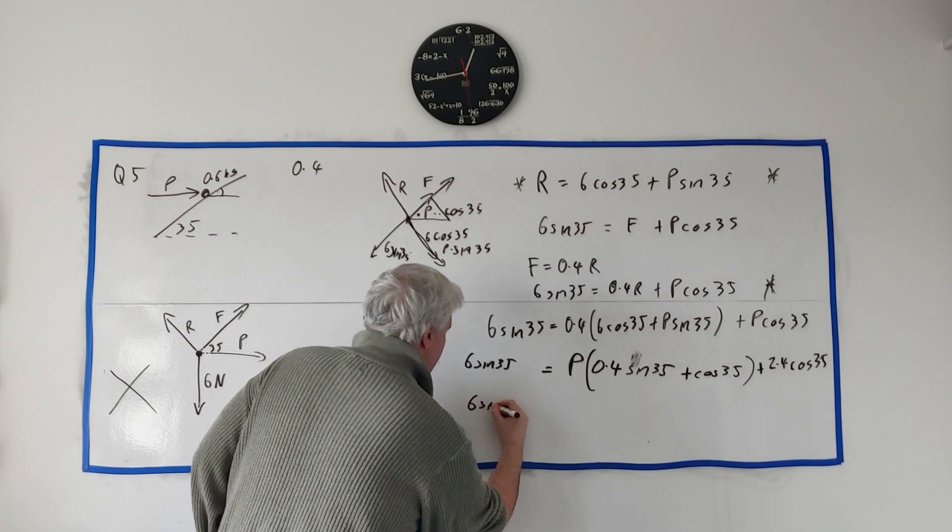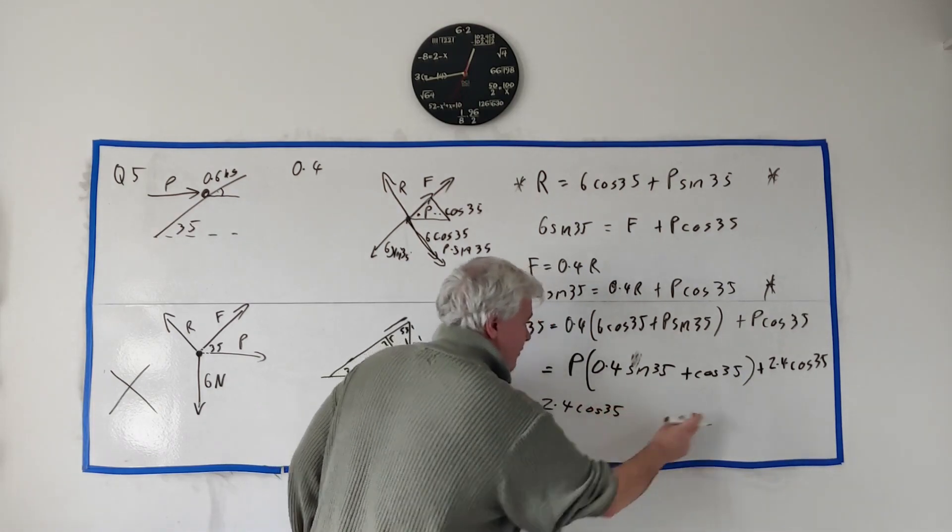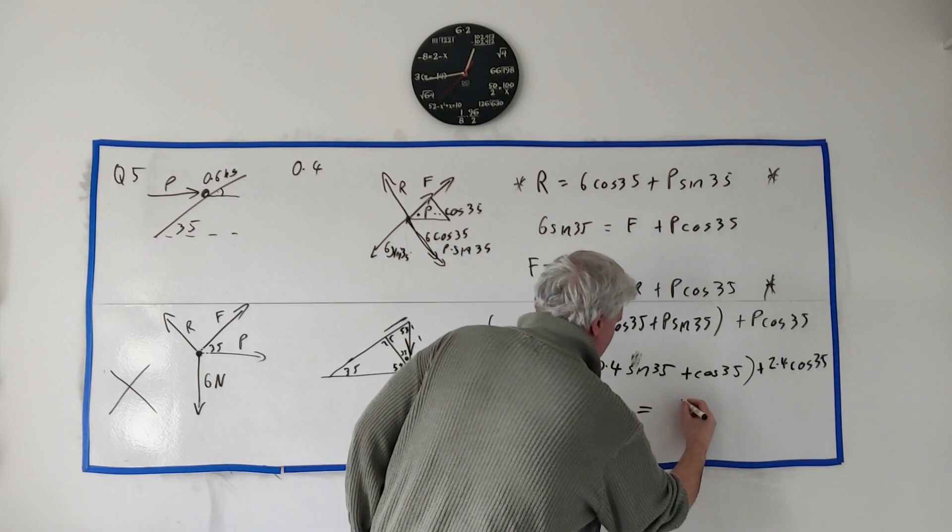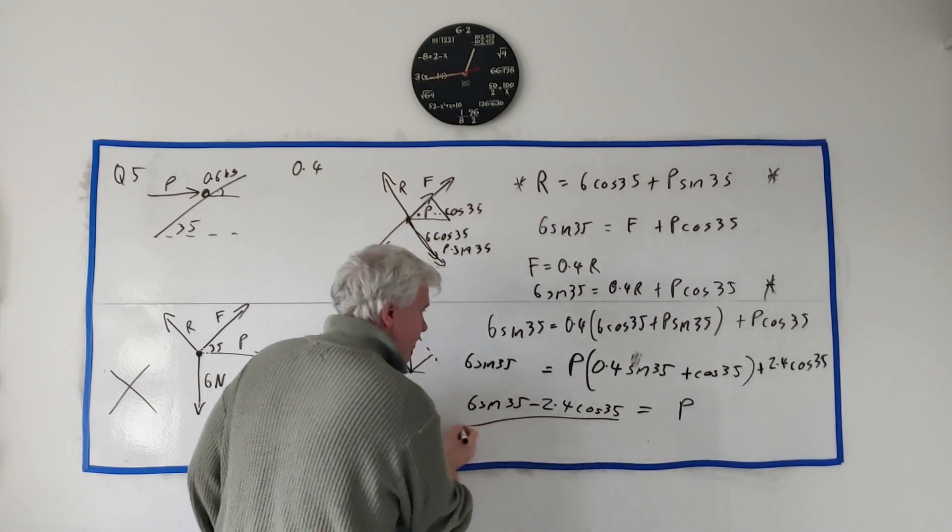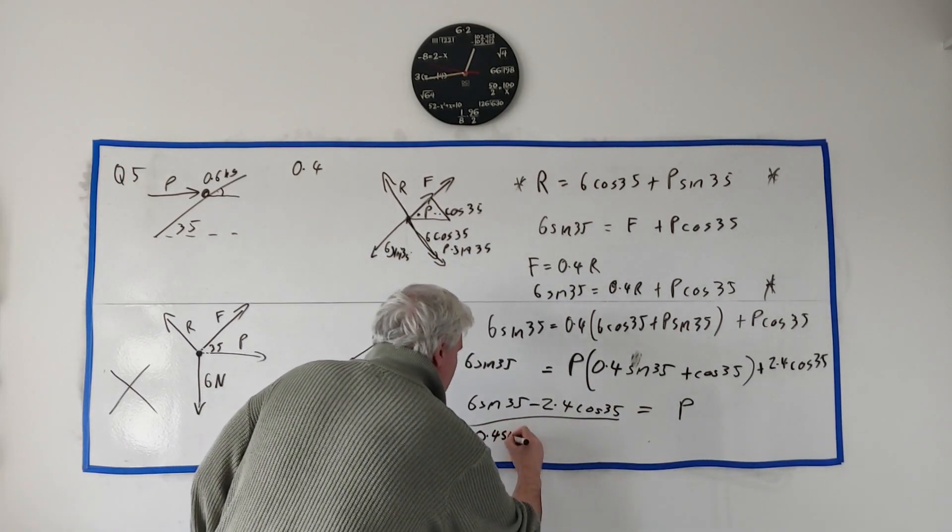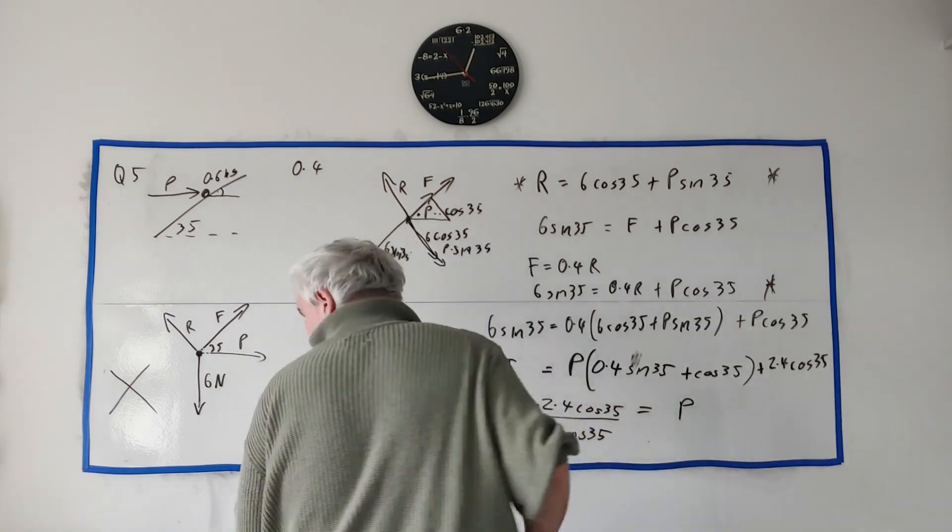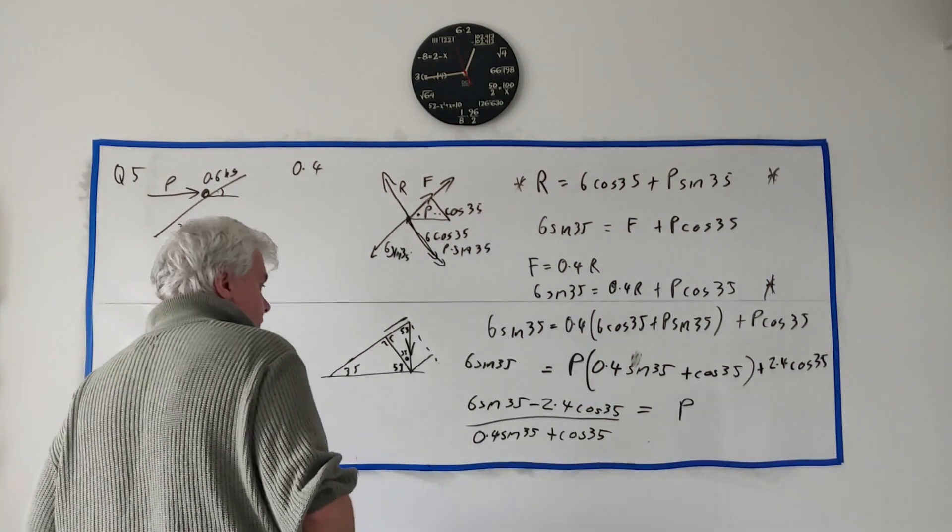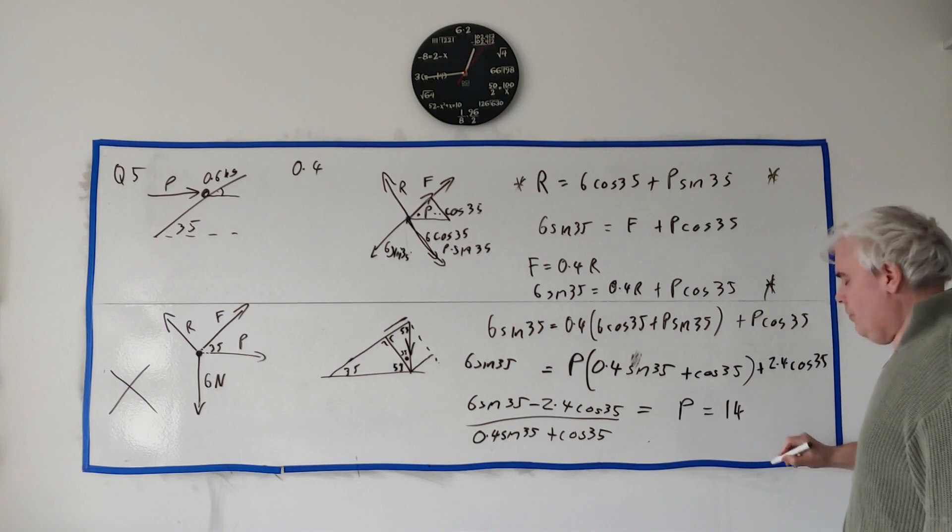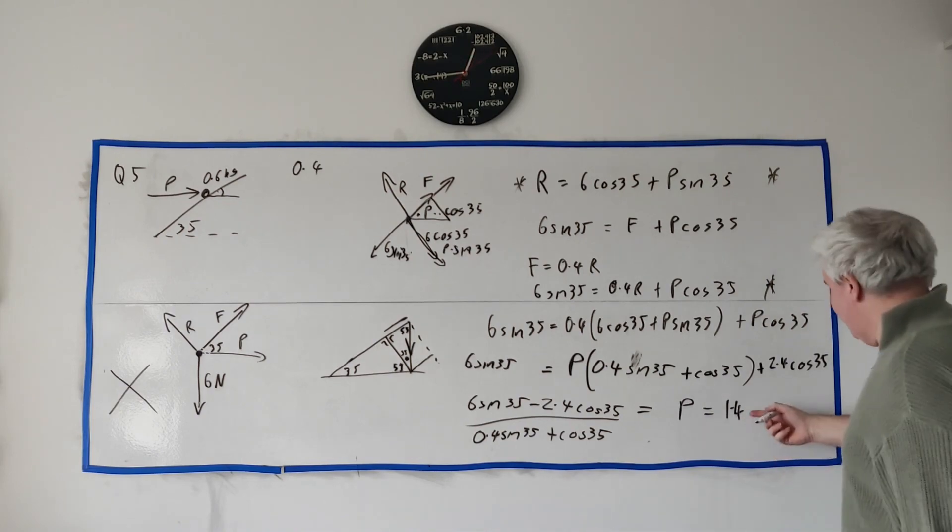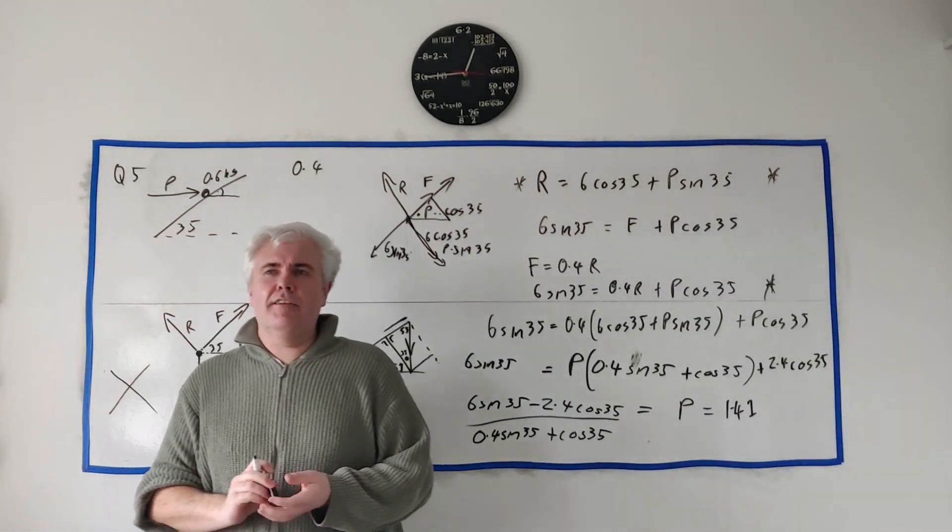That's P equals, and we can go ahead and put that into a calculator. Be careful, it's a big sum like that, easy to make mistakes. If you put that in a calculator you get 1.4, which rounds off to 1.4 or 1.41, which is the full answer to this question.